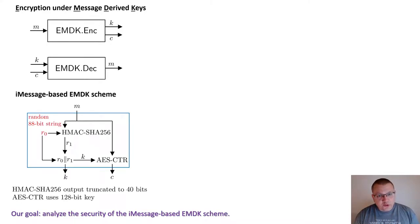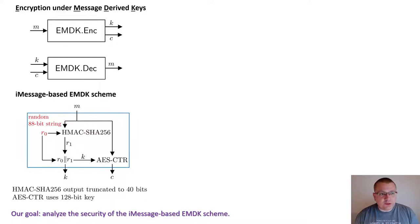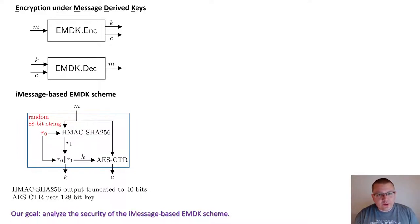We modeled the core part of the iMessage protocol as an EMDK scheme. The encryption algorithm generates the secret key as follows. Half of the key, called R0, is chosen uniformly at random. The other half of the key, called R1, is produced by hashing the first half together with the message. The two halves are then concatenated and used to encrypt the plaintext message M with the counter mode of the AES block cipher.